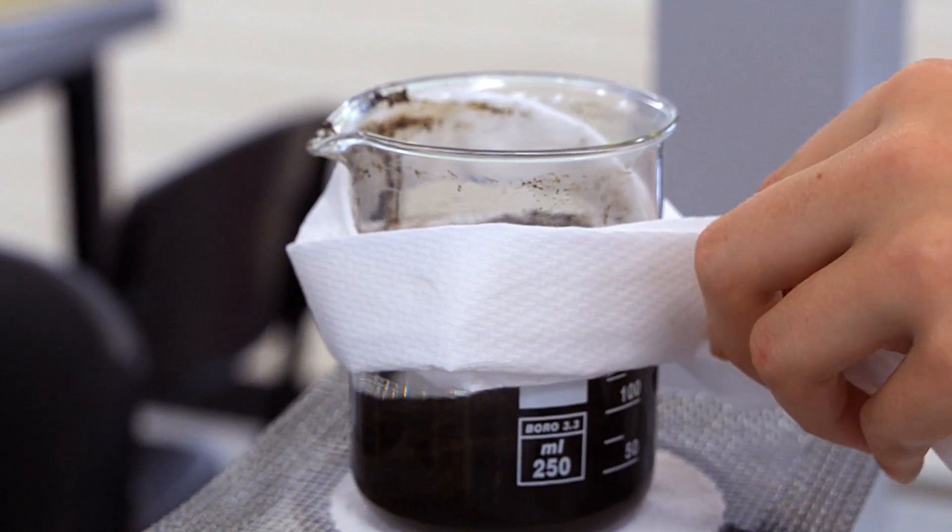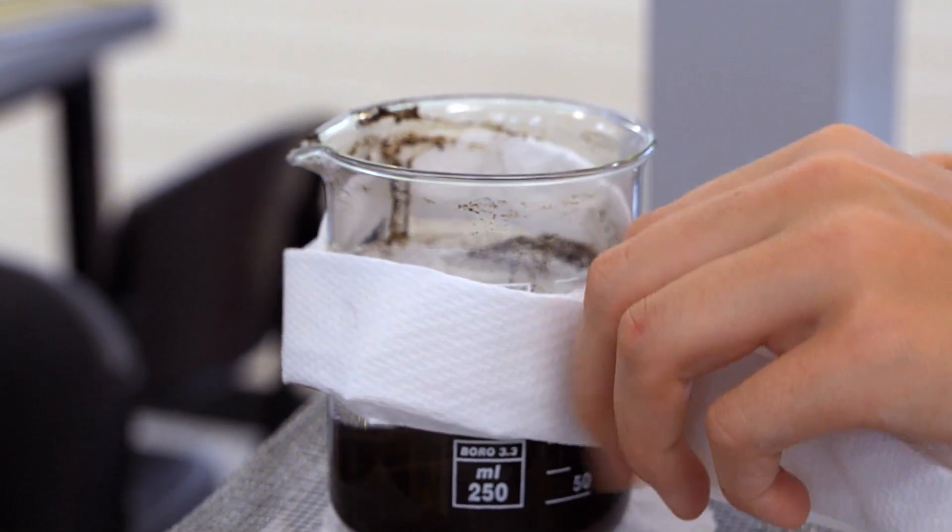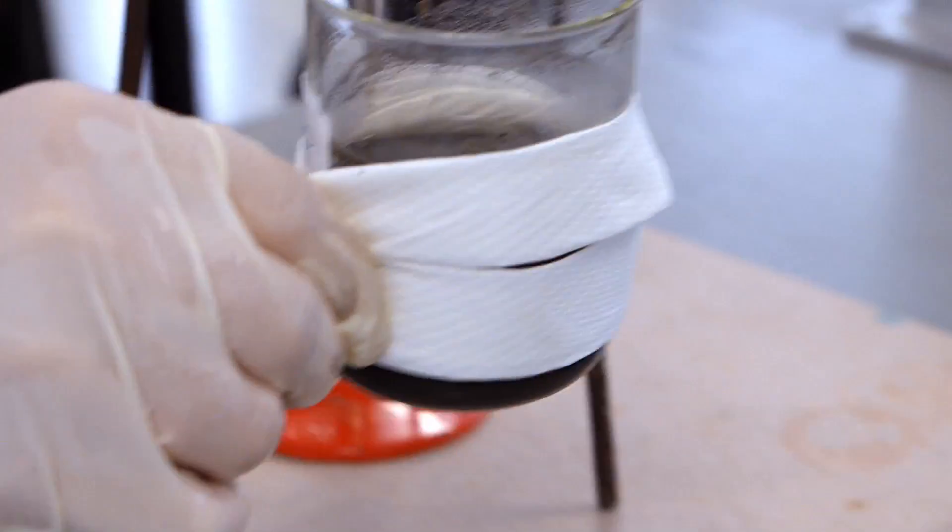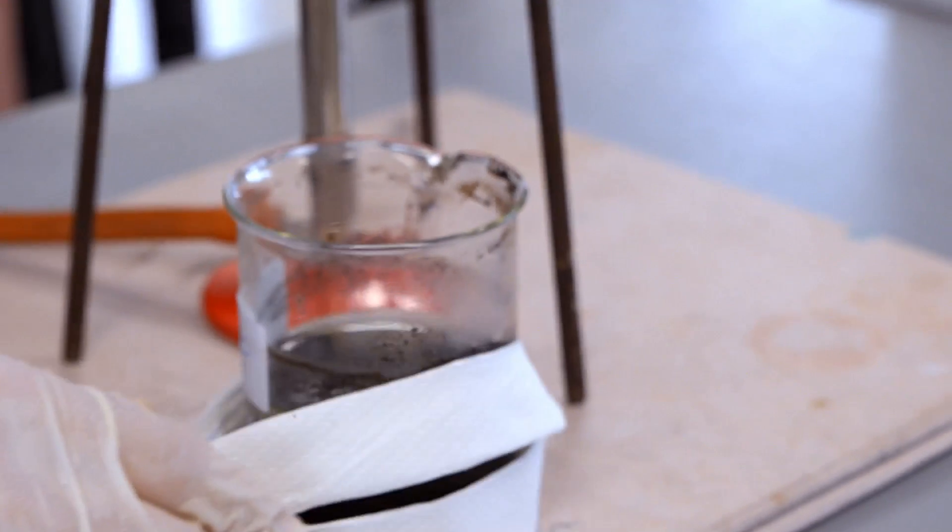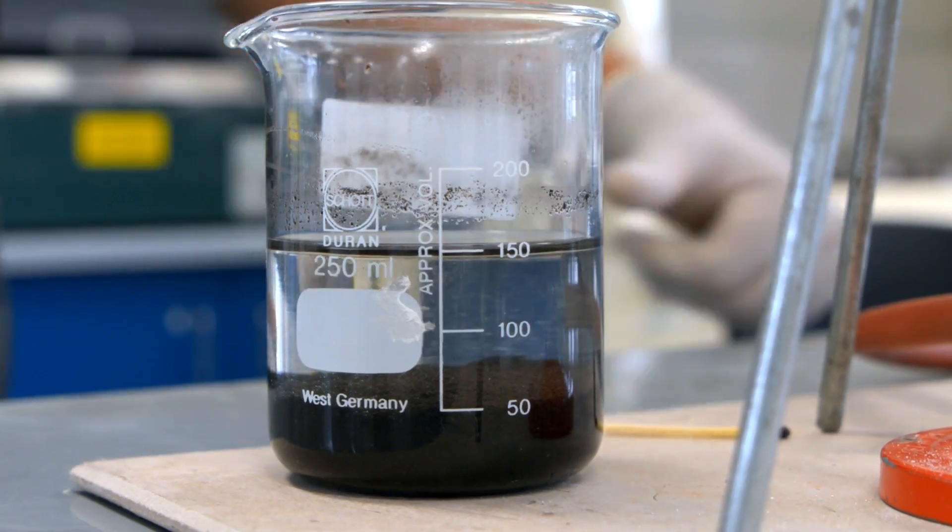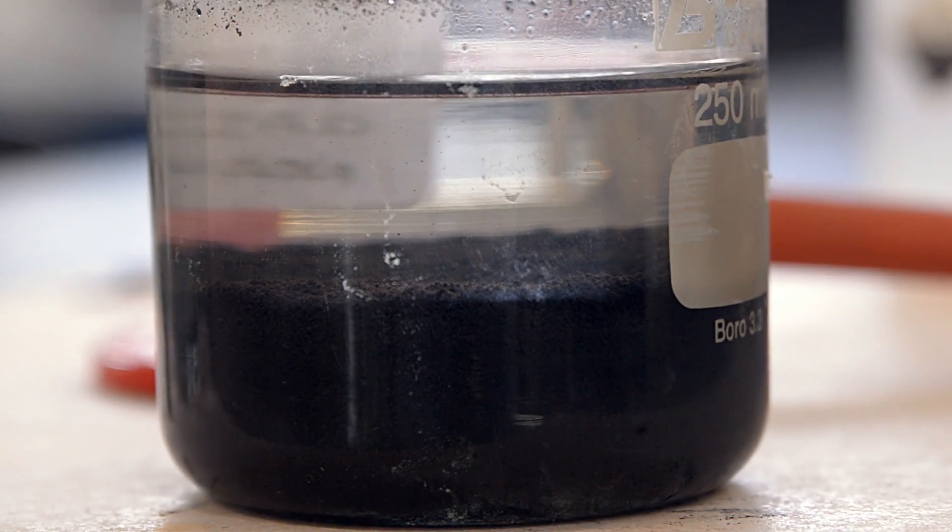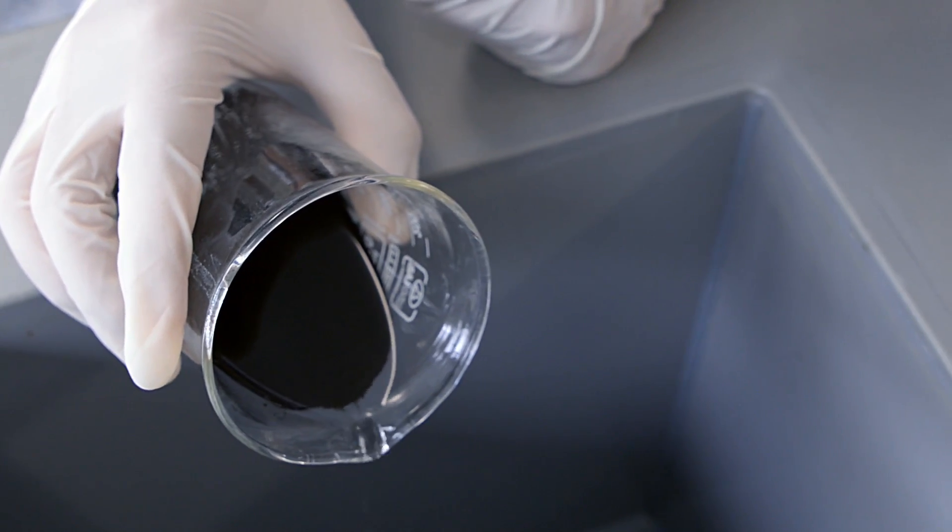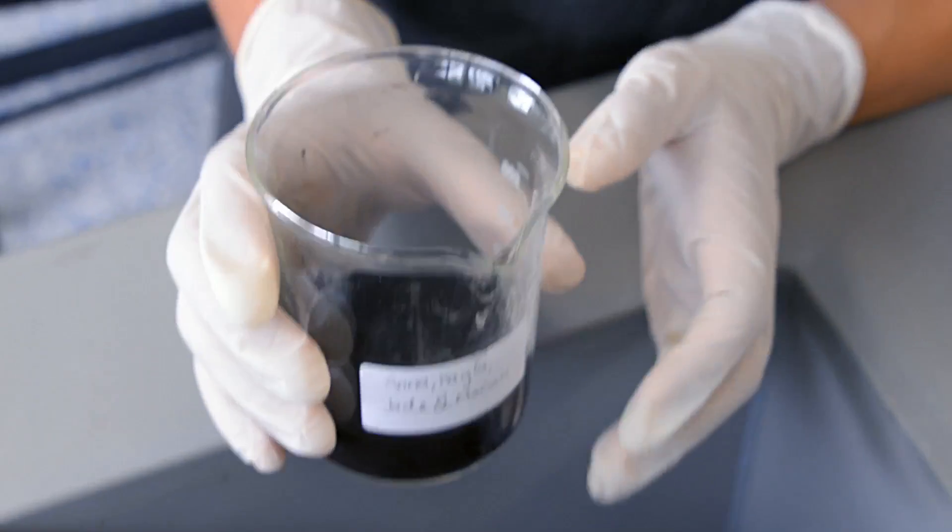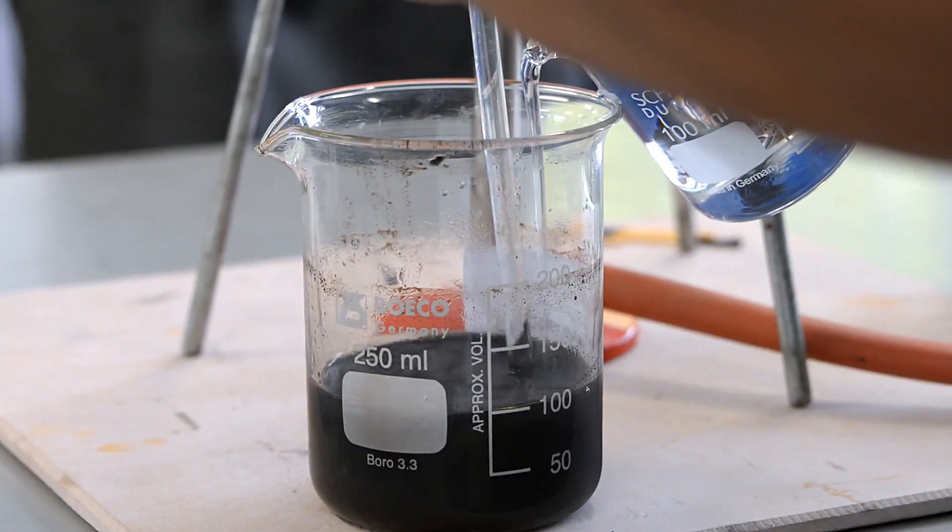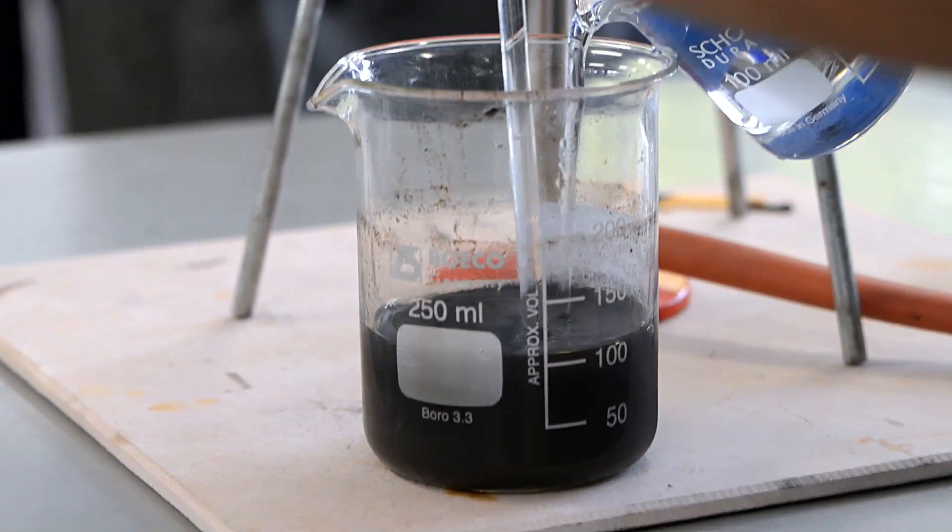The students here are demonstrating a trick to grab the beaker without using steel tongs, which would be slippery. At this point the black solid had settled towards the bottom, enabling us to decant the liquid down the sink, careful not to lose any solid to maintain our product mass. We repeated the process another two times with 50 mL of distilled water each time.